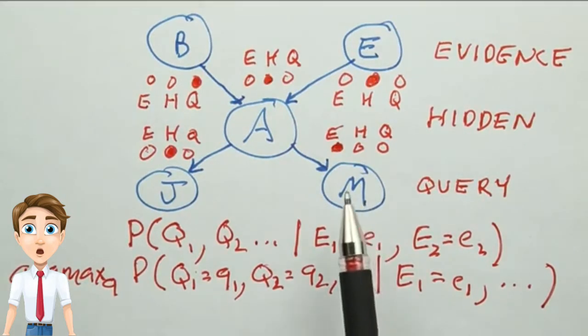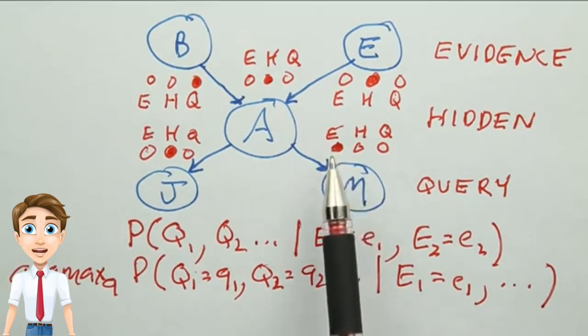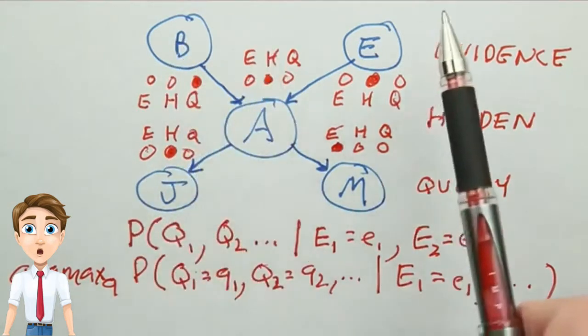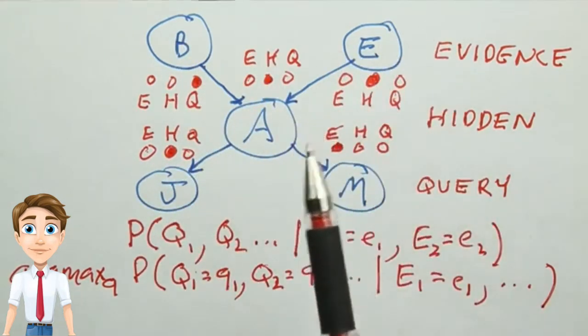The answer is that Mary calling is the evidence node, the burglary is the query node, and all the others are hidden variables in this case.